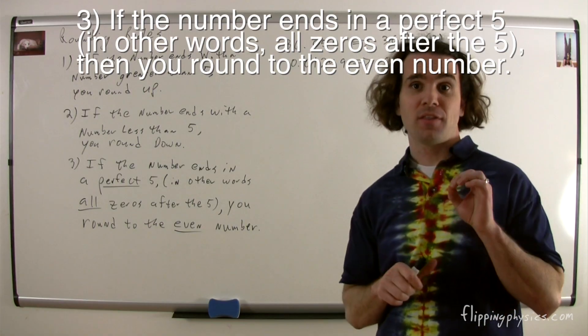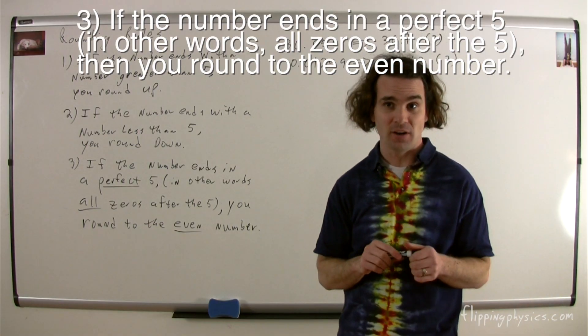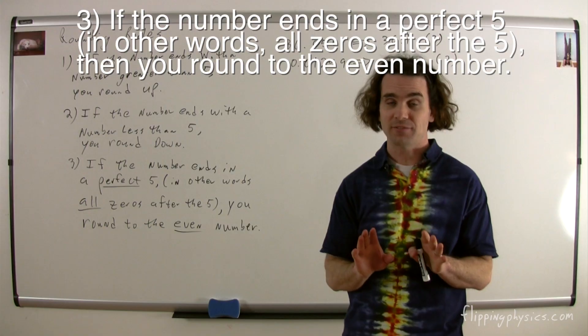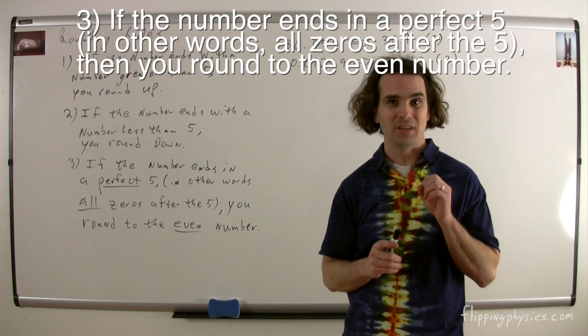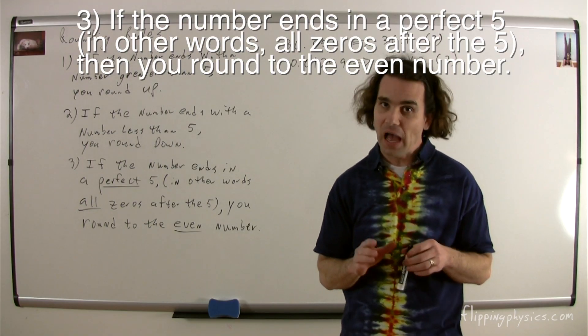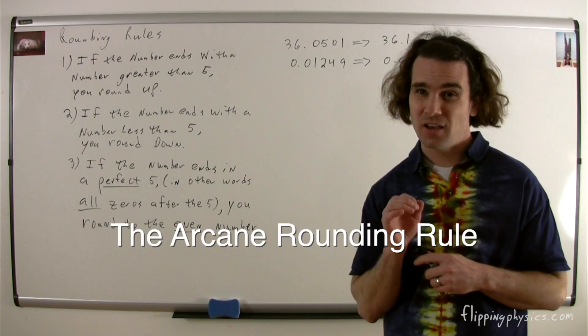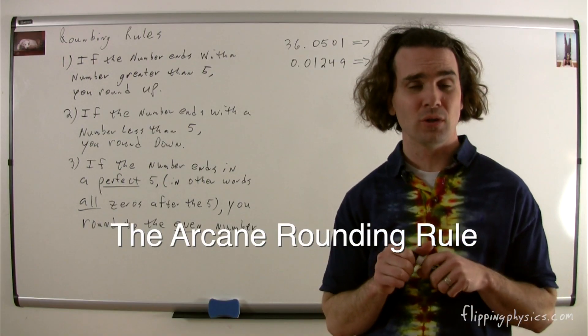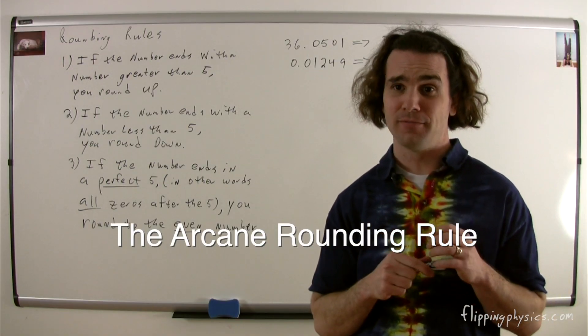Rule number 3. If the number ends in a perfect 5, in other words, all or no zeros after the 5, you round to the even number.